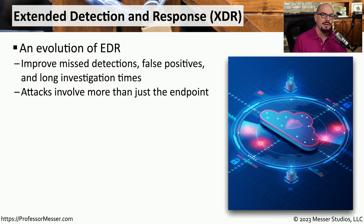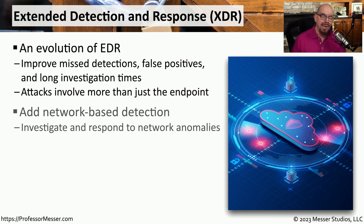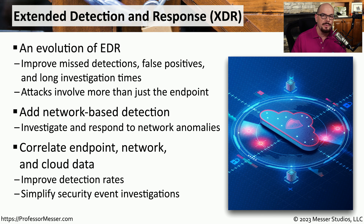The long investigation times that previously existed with different systems are now sped up through automation using XDR. Whenever there's a virus infection or an attack on a network, it often involves more than one system. So instead of having a single agent that only knows what's happening on a single device, XDR can interpret data from many different systems simultaneously. Adding data about the type of network traffic running over the network, you're now able to correlate information across multiple systems and very diverse data types, providing a much more efficient process for identifying, investigating, and removing the malicious code.